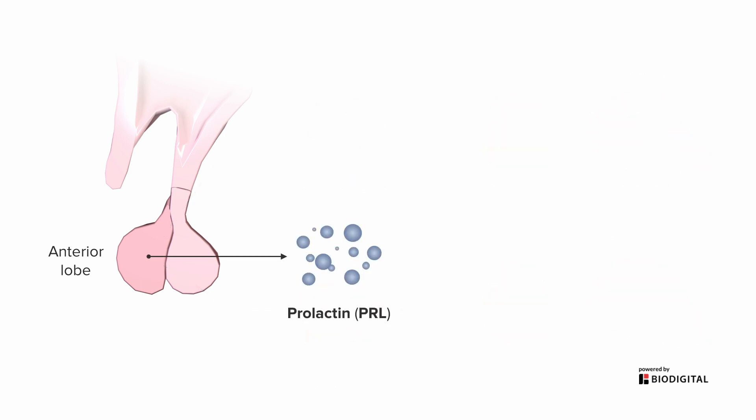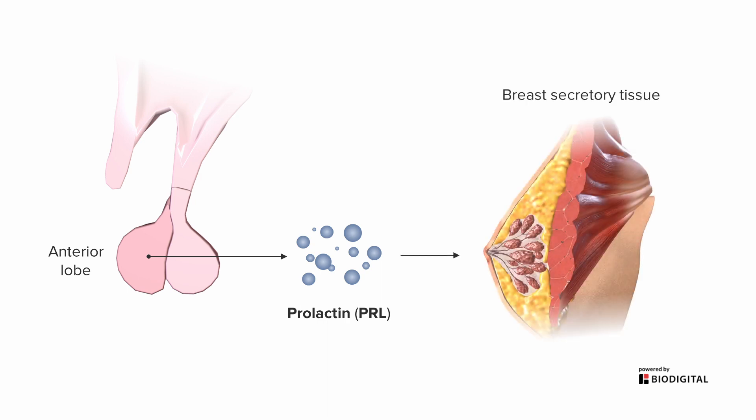Prolactin actually tells you what it's doing as well. It's going to act on the secretory breast tissue to produce lactation — so prolactin is essentially the promotion of lactation.